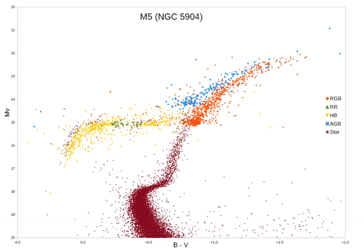This has sometimes been called the second parameter problem for globular clusters, because there exist pairs of globular clusters which seem to have the same metallicity yet have very different HB morphologies. One such pair is NGC 288, which has a very blue HB, and NGC 362, which has a rather red HB. The label 'second parameter' acknowledges that some unknown physical effect is responsible for HB morphology differences in clusters that seem otherwise identical.